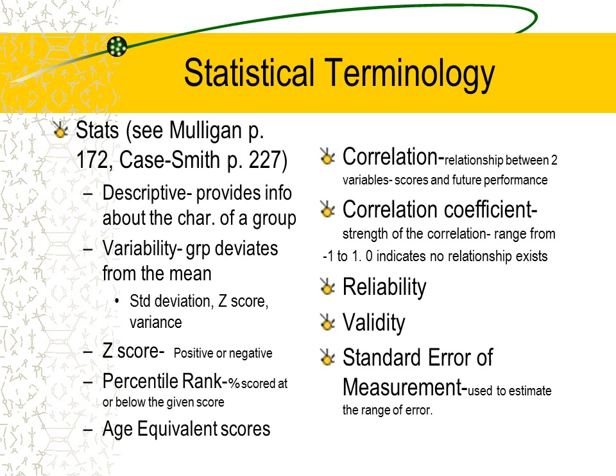We need to use caution with age equivalent scores. I would often report them to insurance companies, but when going over scores with parents, instead of focusing on exactly how far delayed they are with age equivalent scores, I would say they're delayed enough to need services and explain what we can do to help. I would point out their functional concerns and specifically tell them what I could do. Most times parents really appreciated that approach.